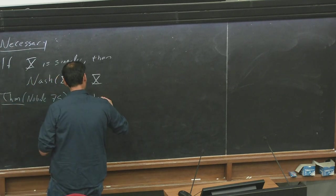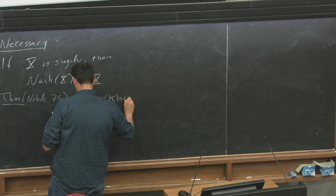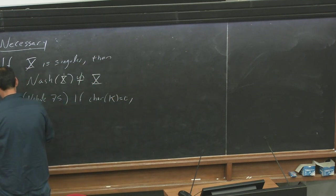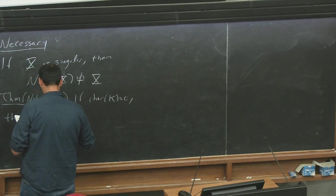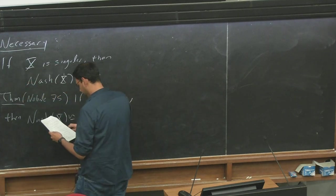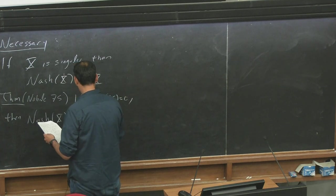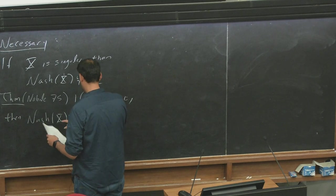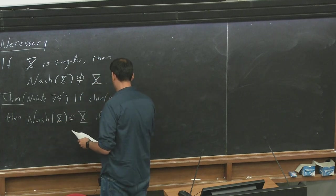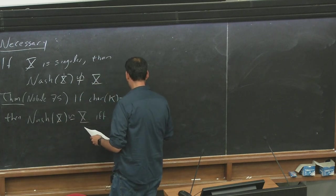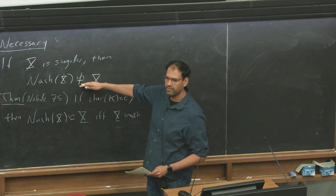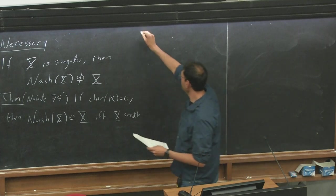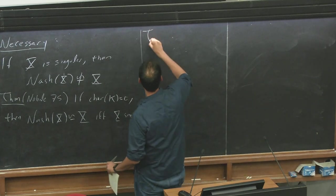And this is a theorem of Nobile, same paper, 75. He proved that if the characteristic of the field is 0, then the Nash Blow-up of x equals x if and only if the variety is smooth.